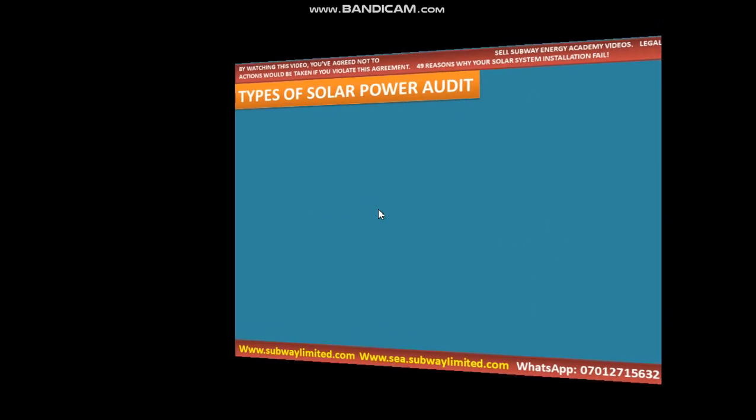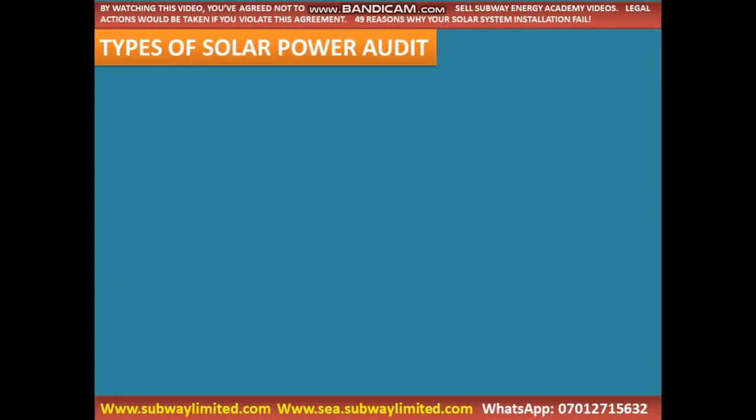Let's look at types of solar power audits. If you fail to understand all these concepts, there is no way you will have an installation that will not fail. We are talking about 49 reasons why your solar system installation failed. If you don't know how to conduct a professional power audit, you are not fit to be called a solar system installer, irrespective of how well you can install. You might be an electrician who wants to switch to understanding how to install solar systems.